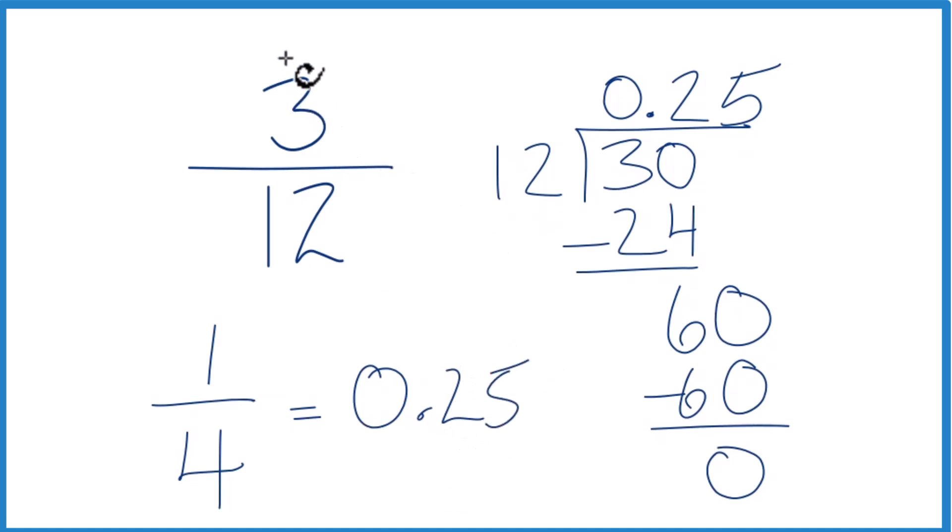So either way, when you write 3 twelfths as a decimal, you get 0.25 or 1 fourth. When you simplify that, also 0.25. These are equivalent fractions. This is Dr. B.